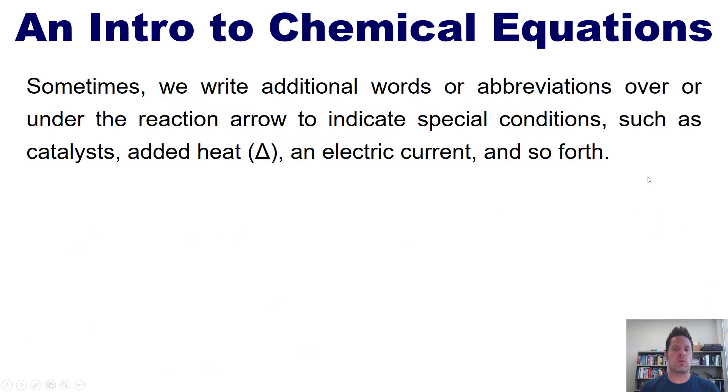Now, sometimes we write additional words or abbreviations over or under the reaction arrow to indicate special conditions, such as catalysts, added heat, which is indicated with a triangle. It's a Greek delta letter, but I sometimes like to call it triangle, and electric current, and so forth.